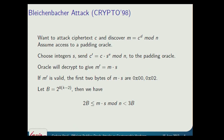So if we set B to be this constant value, we now have the inequality: M times S is greater than or equal to 2B and less than 3B. That just comes from the fact that the plaintext starts with 0x00, 0x02. Intuitively, we've learned something about M. We know M times S, reduced modulo N by subtracting R times N for some integer R, lands in the range 2B to 3B.